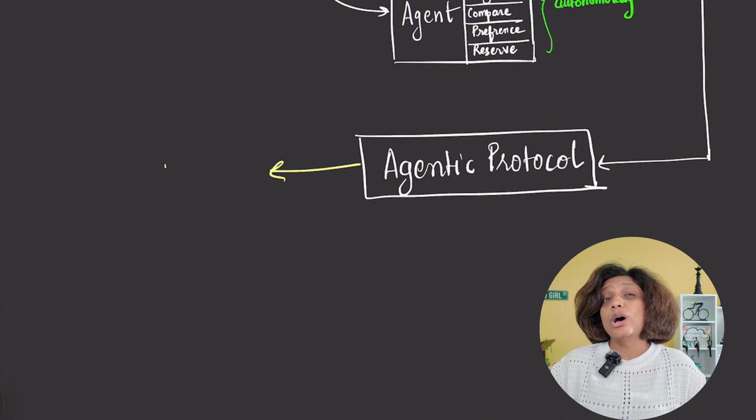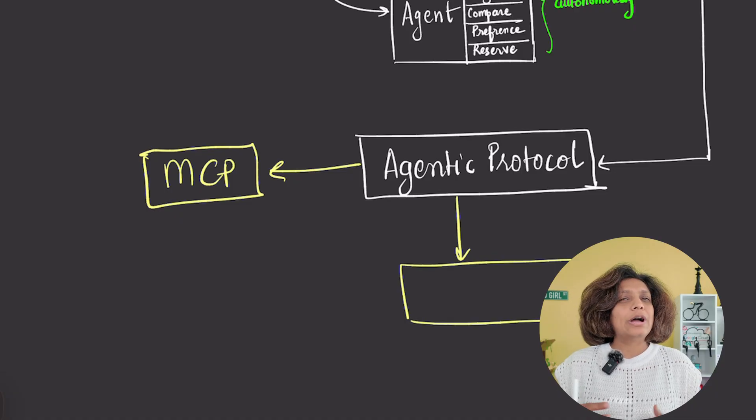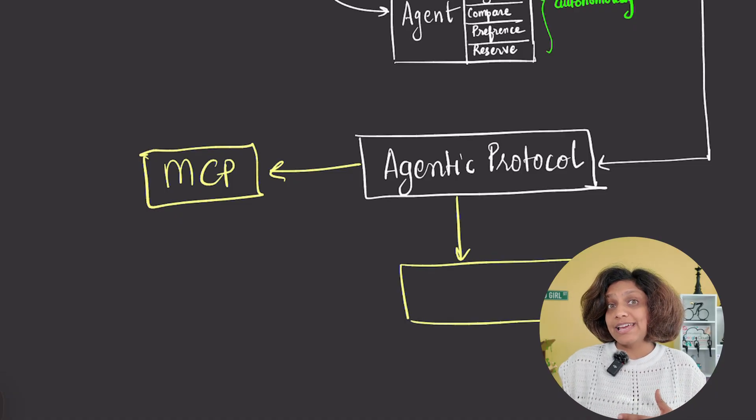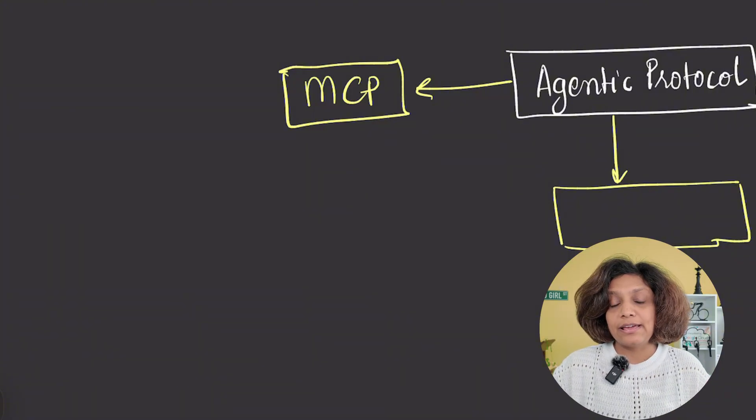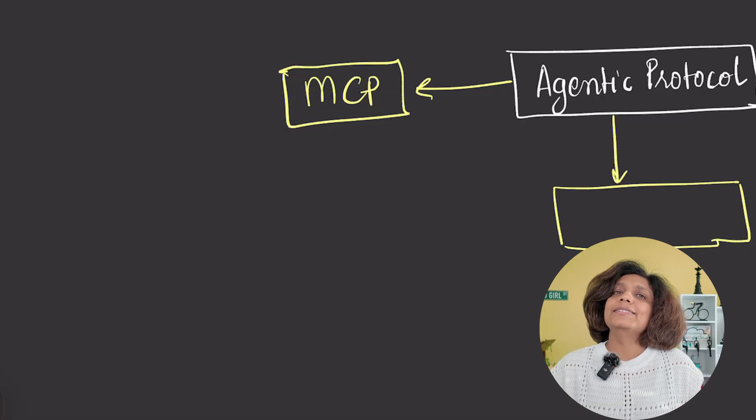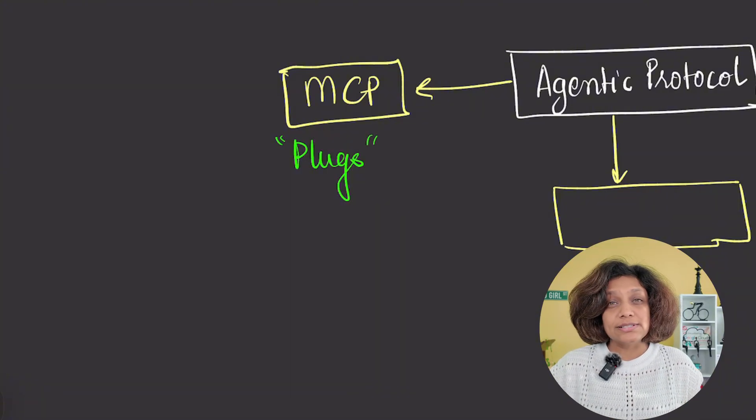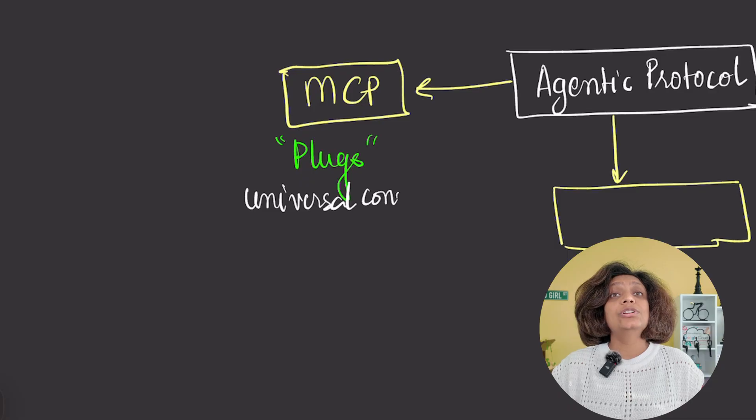The first one is the model context protocol, MCP, from Anthropic. This is an open standard for how applications provide context to language models and connect them to external tools and services. Think of MCP as standardizing the plugs for the tools. Instead of custom integration code for every single service, you use MCP to create universal connections. Here's an example. An AI agent in Slack could use MCP to pull the latest project updates directly from Asana and display them in your channel. No custom integrations required.